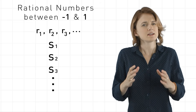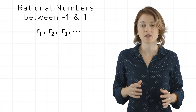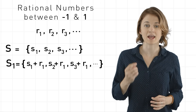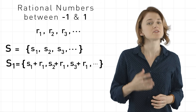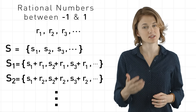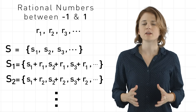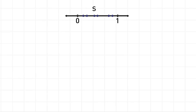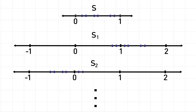To be more precise, here's how you define the set S1: take each element in S and add R1 to it. The set S2 is defined by adding R2 to each element in S, and so on. So if we visualize S as a bunch of dots between 0 and 1, then each of the S1, S2, S3, and so on are just copies of S shifted a bit. They'll be between negative 1 and 2.